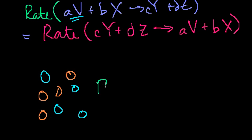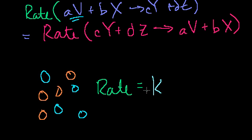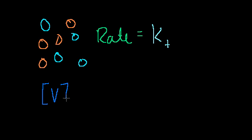The rate is going to be proportional to some constant K that takes into account things like temperature and molecular configuration — because it's not just about the molecules being there; you also have to worry about their kinetic energies and shape, since some configurations are more conducive to reaction than others. So let K account for all of that, and let's call K-plus the constant for the forward reaction.